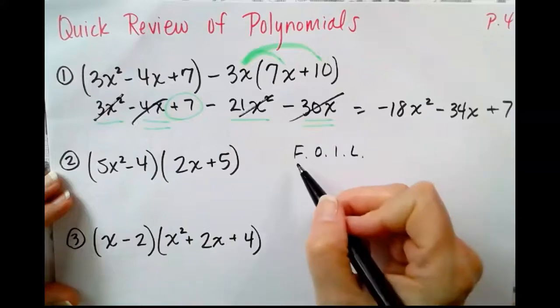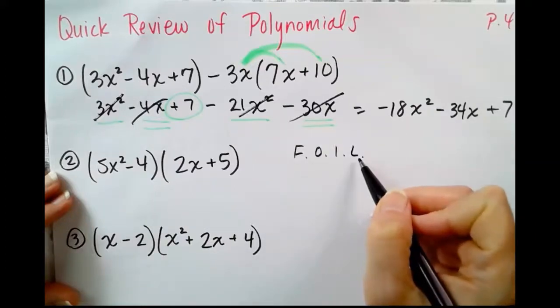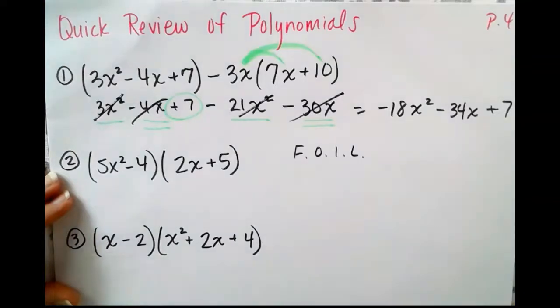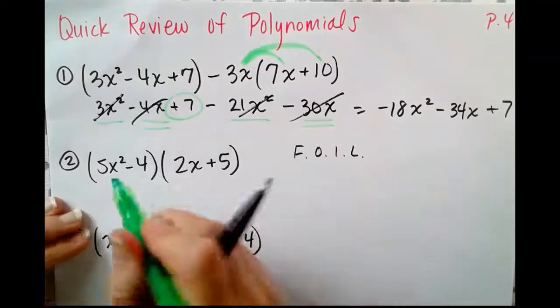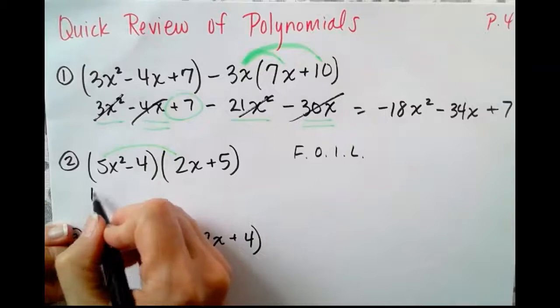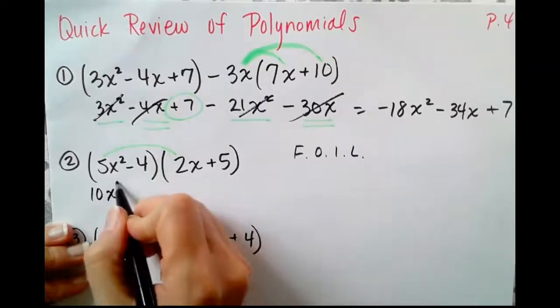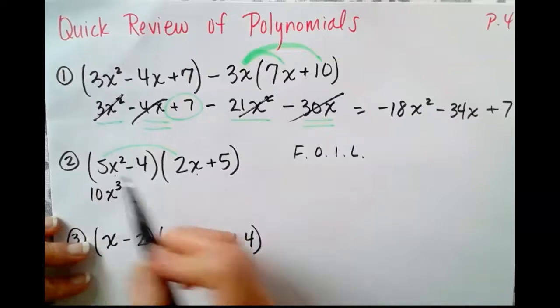Normally we've talked about this in terms of a double distribution. You might see in your homework the acronym FOIL. FOIL stands for first sides, outsides, insides, last sides. It's just an acronym to help you remember to do every part of a double distribution. Let's do the first sides, 5x squared times 2x is 10x cubed.